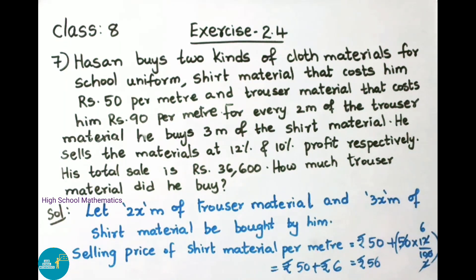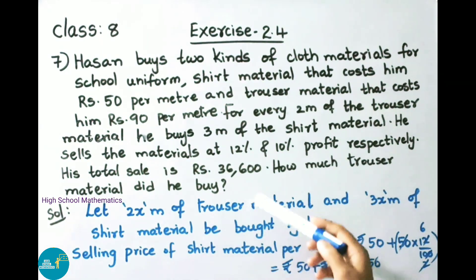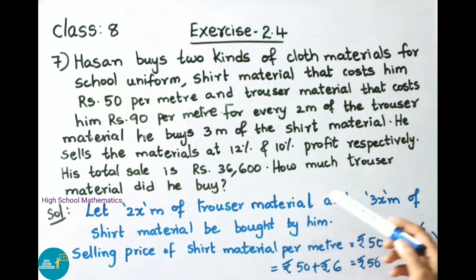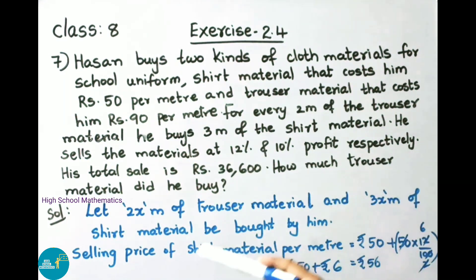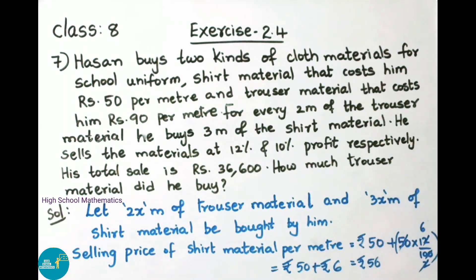Let us see the solution. Let 2x meters of trouser material and 3x meters of shirt material be bought by him.